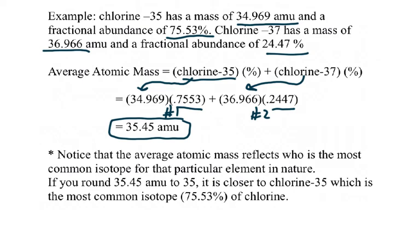The result, rounded to four significant figures because the percentages have four significant figures, is 35.45. This is actually the number on the periodic table — this is how chemists calculate what you see there. Notice that the average, 35.45, is much closer to 35 than to 37. The reason it's closer to 35 is because chlorine-35 is the most common isotope, existing 75.53% of the time. The average will always be closest to the most common isotope.